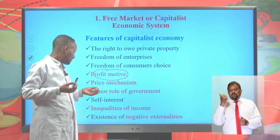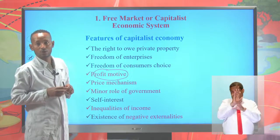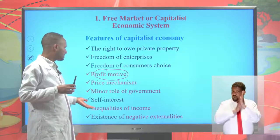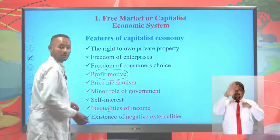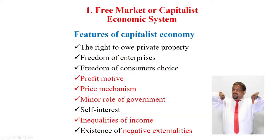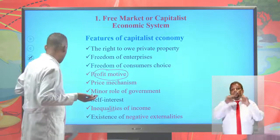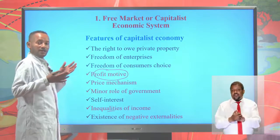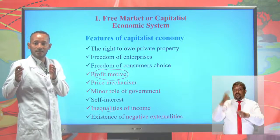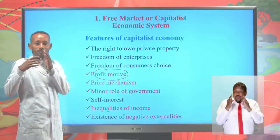Another feature of the capitalist economic system is that there is a minor role of government — government intervention is minimum. There is self-interest. There is also inequality of income, meaning the gap between the poor and the rich is very high. Another feature is the existence of externalities — both positive and negative. Negative externalities occur when the actions of one party affect the livelihood of others. Positive externalities occur when the actions of one party benefit others.